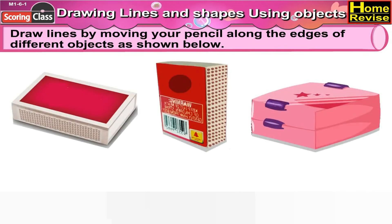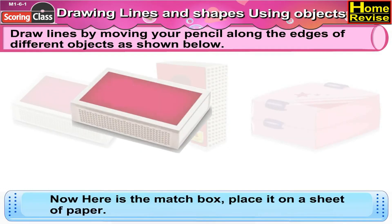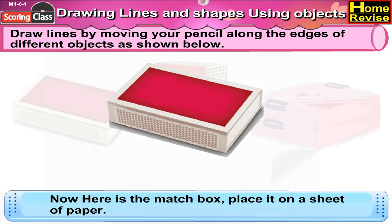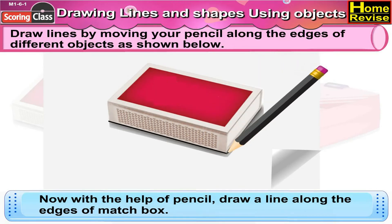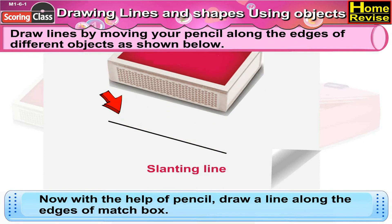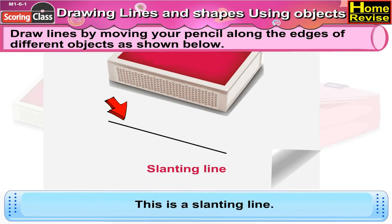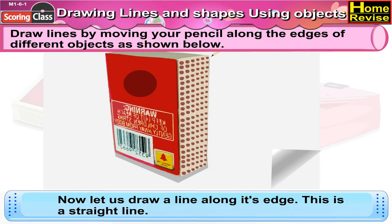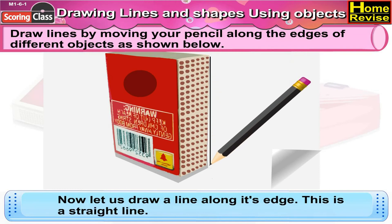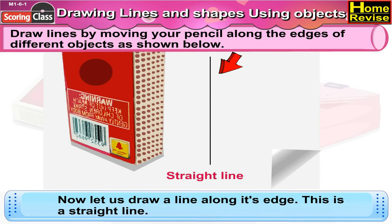Draw lines by moving your pencil along the edges of different objects as shown below. Now here is a matchbox. Place it on a sheet of paper. Now with the help of a pencil, draw lines along the edges of the matchbox. Now this is a slanting line. Now let us move the matchbox and put it like this, and draw a line along its edge. This is a straight line.